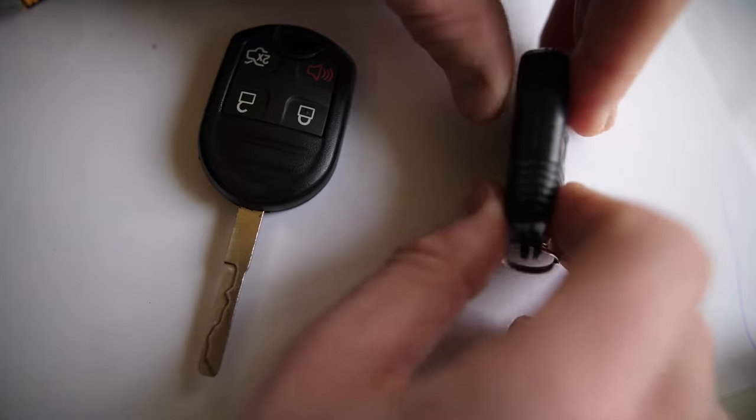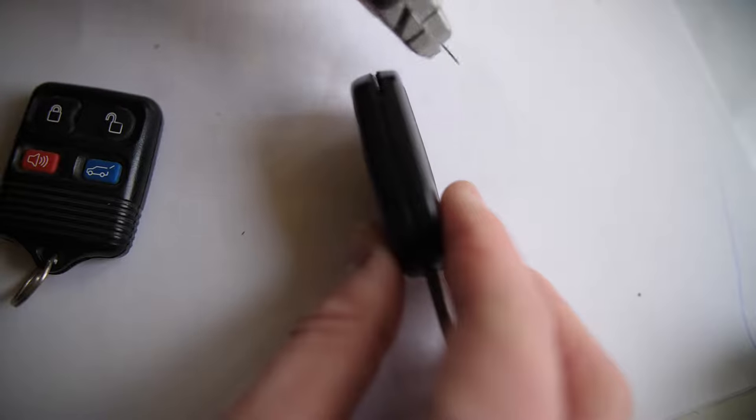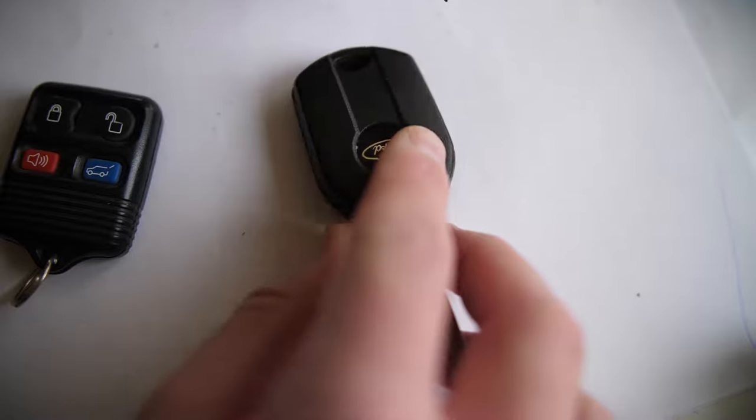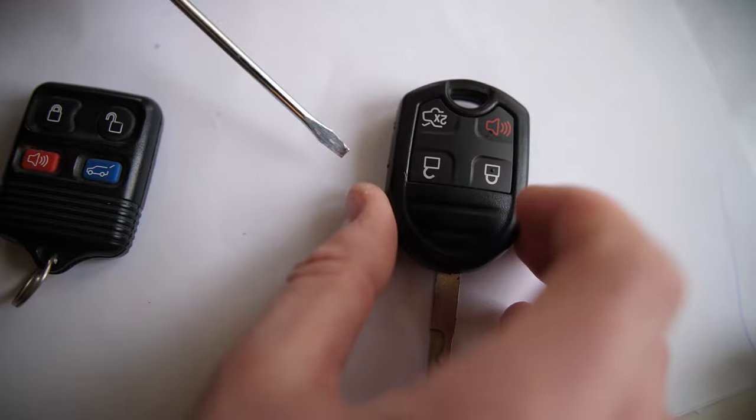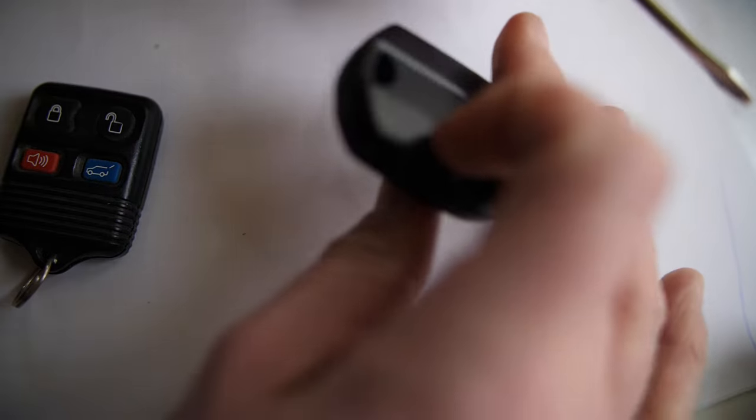And same thing on this older fob as well. And so on these ones, what you may need to do is score—when I say score, that just means kind of cutting around right on this line to kind of, if there's any glue, or just to kind of get some separation in there. Then you can take your handy dandy flathead screwdriver and just kind of slowly pry apart.